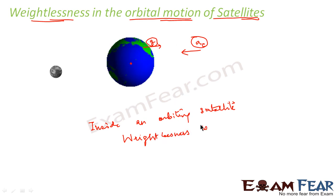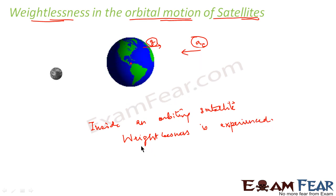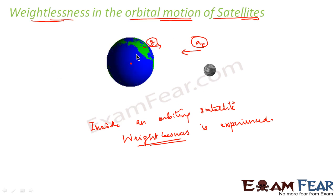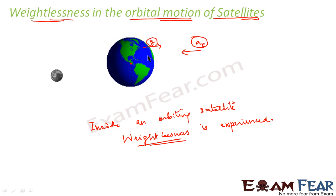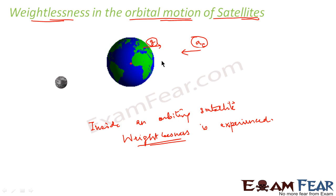Weightlessness is experienced inside an orbiting satellite because there is centripetal acceleration towards the center of the Earth, and at the same time there is Earth's acceleration due to gravity acting outward from the center of the Earth. These two being equal and opposite cancel out each other, so inside the satellite everything is in a state of free fall.